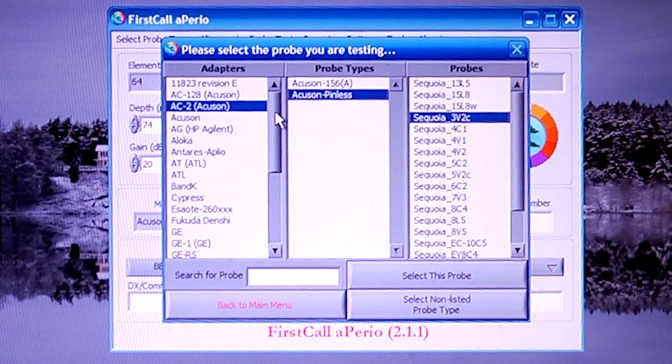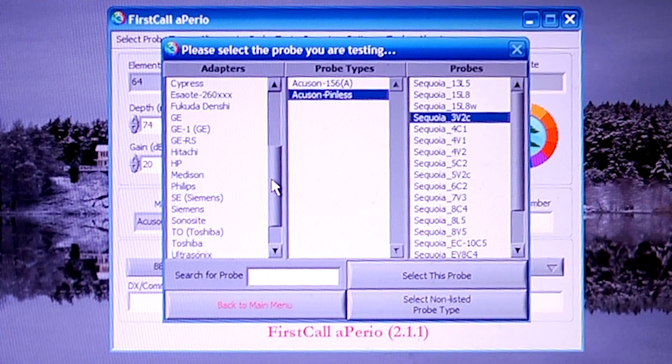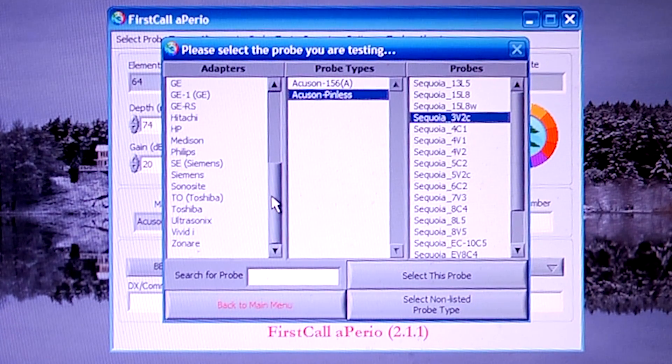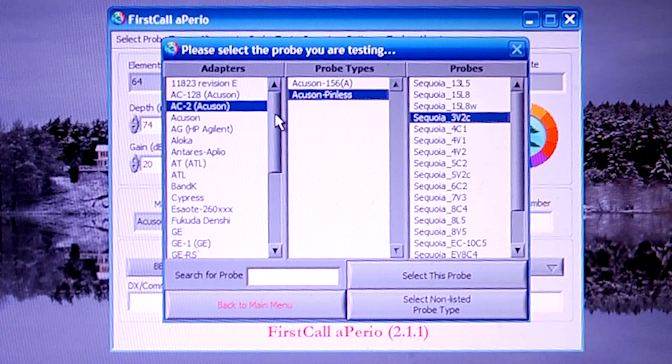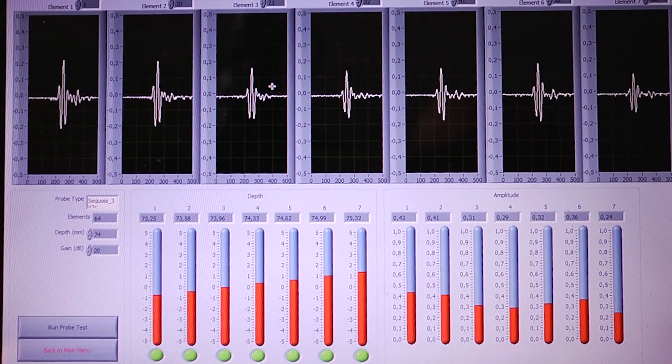In this menu you select the probe to test. On the left hand side you have all the different suppliers of ultrasound transducers and devices that we can test on the Aperio system. We will use an Acuzone pinless 3v2 for this test. You can enter the serial number to the probe and move over to alignment.